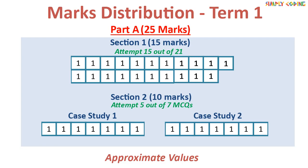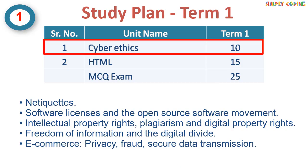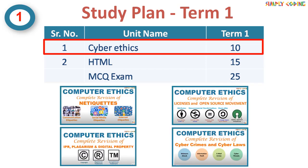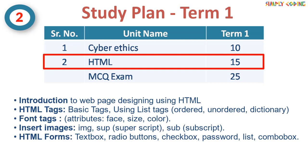Now that you know the rough pattern of the Term 1 paper, let's cover how you are going to study for the exam. My suggestion is to start with Cyber Ethics, as it is the easiest and you can finish it very quickly. There are five subtopics so you can roughly expect two marks on each. All these topics are very easy and we already have case study-based content and summary sheets. Along with it, you need to practice as many MCQs as you can. You will find the study material for this in the link given in the description.